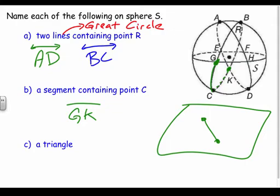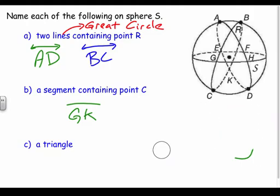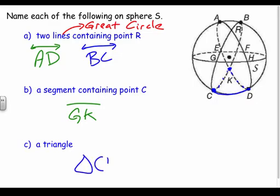It's a little confusing, but segment GK means along the face of the sphere — not straight through it. We can't go through the sphere. And for a triangle, it's just three points on the face. For example, triangle C, K, D: if I unwrapped the paper around the ball, it would make a triangle. There are probably multiple answers you could give.